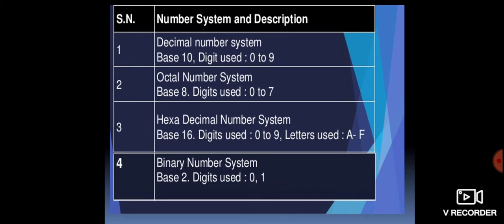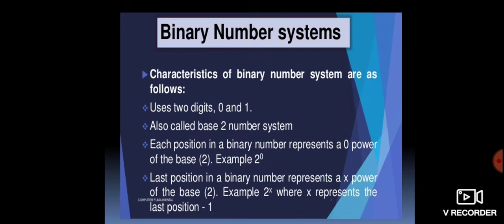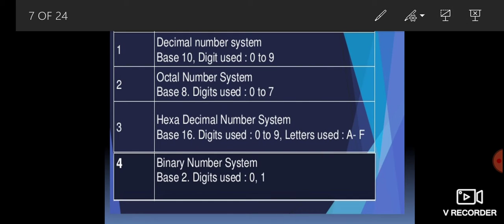The decimal number system has a base of 10 and the digits used are 0 to 9 — that means 10 digits in total. In the octal number system, as the name suggests, octal means 8, so its base is 8 and the digits used are from 0 to 7.